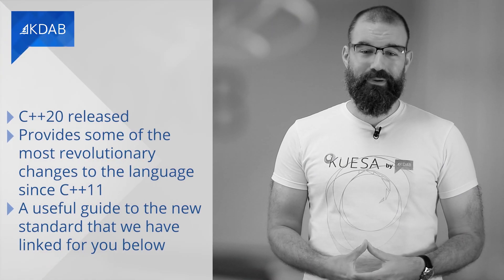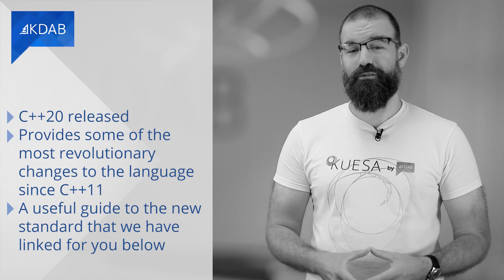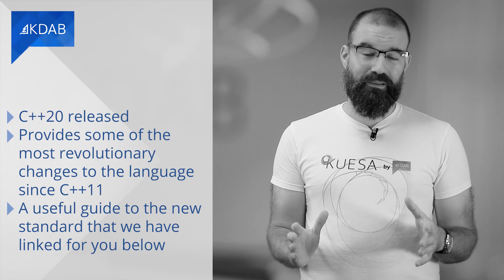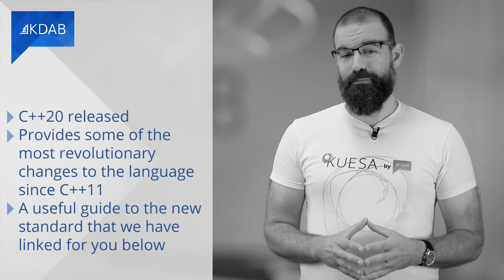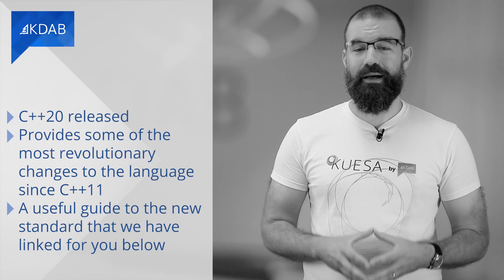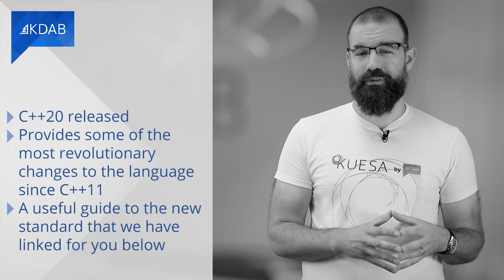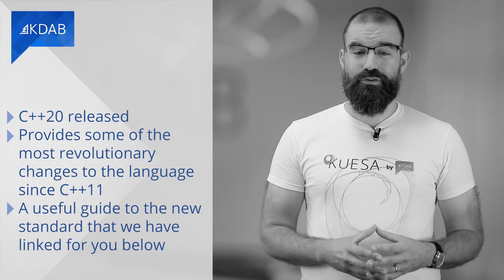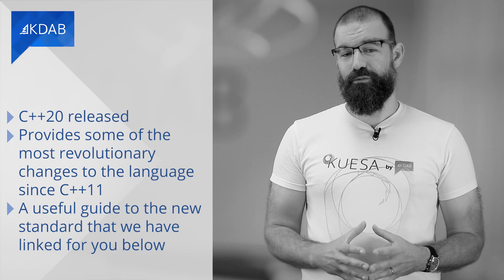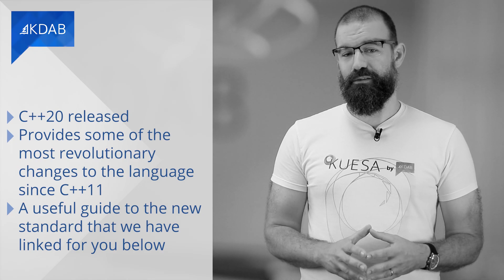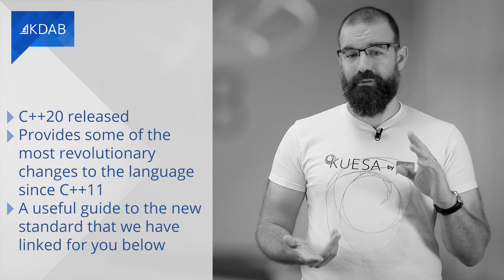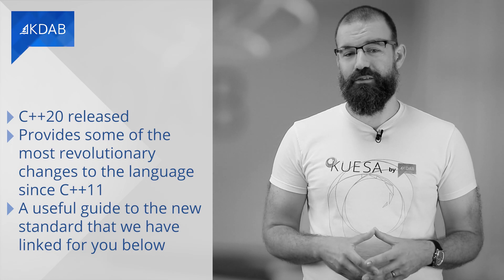If you're a C++ programmer, it probably won't have escaped your attention that the C++20 standard has been released and is supported, in great part, by the most popular compilers. We're excited, not only because we love C++ and many of us at KDAB are language-standard enthusiasts, but because it provides some of the most revolutionary changes since the groundbreaking C++11 release. C++20 levels the playing field between this veteran language and newer upstarts. KDAB's Giuseppe D'Angelo and Ivan Čukić have assembled a useful guide linked below, focusing on the biggest four improvements: concepts, coroutines, modules, and ranges, plus a couple of smaller interesting changes.